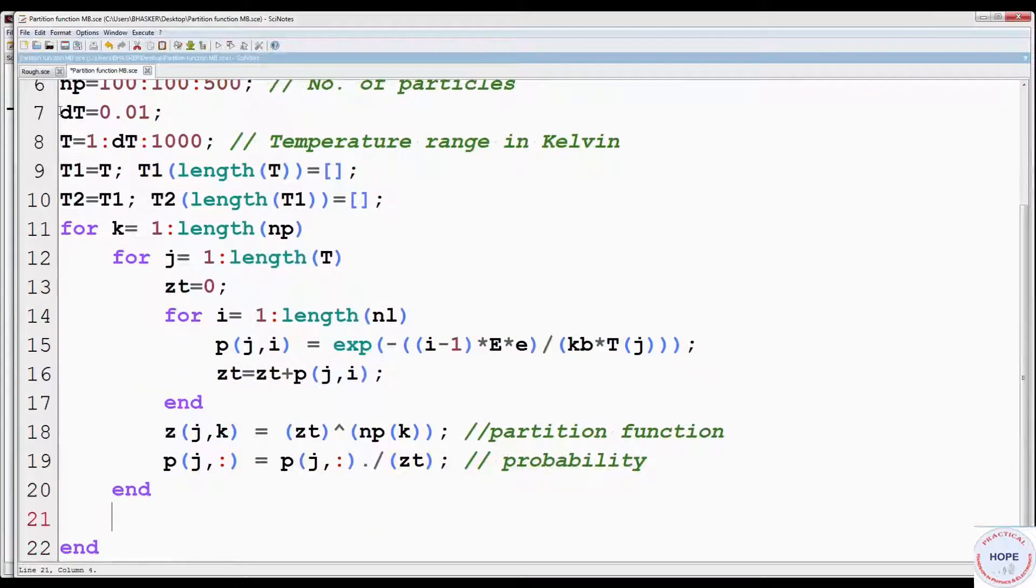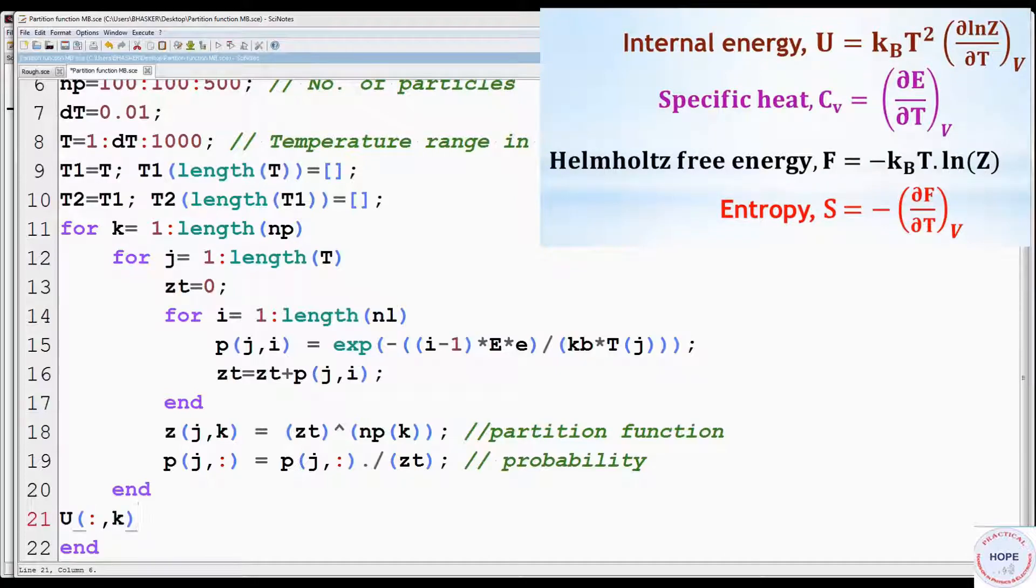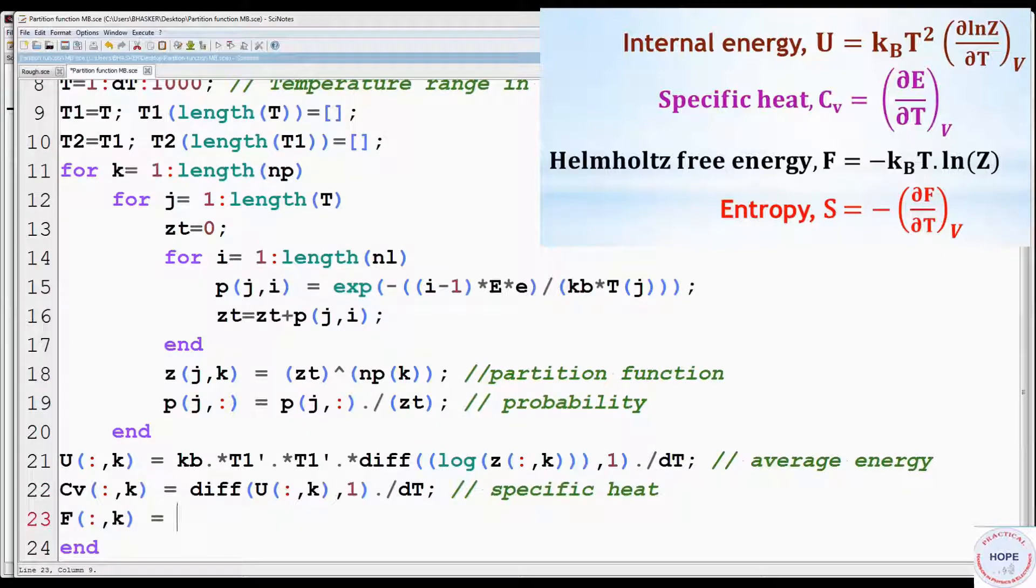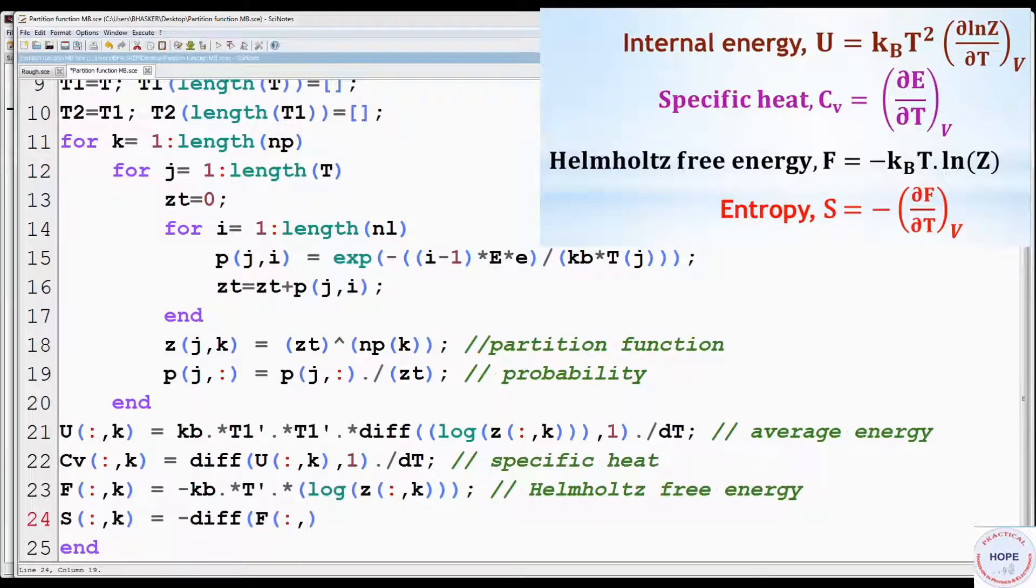Now since we have evaluated the partition function, we can evaluate other thermodynamical variables. First, average energy U given by KB multiplied by T square multiplied by derivative of log Z. Since we have taken derivative of log Z once, instead of temperature vector T, we have to use T1. Next, specific heat DU by DT, then Helmholtz free energy F minus KBT log Z. Finally, entropy, minus derivative of Helmholtz free energy, that is minus DF by DT.